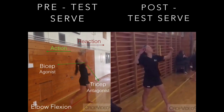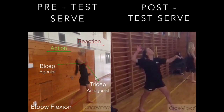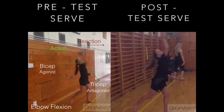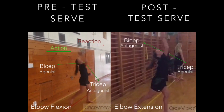However, in my post-test serve I improved, as my timing of Newton's third law was correct. My elbow, which is a hinge joint, is in extension with the agonist being the tricep and the antagonist being the bicep. This means that I have generated enough force to ensure that the serve is hard and flat and goes over the net.